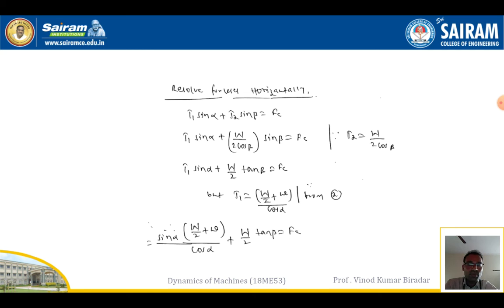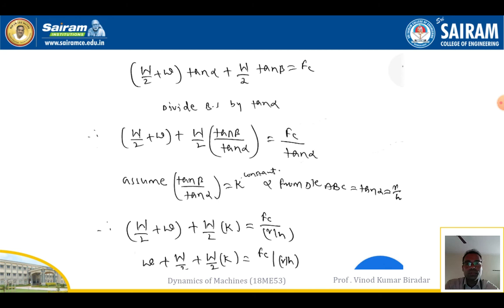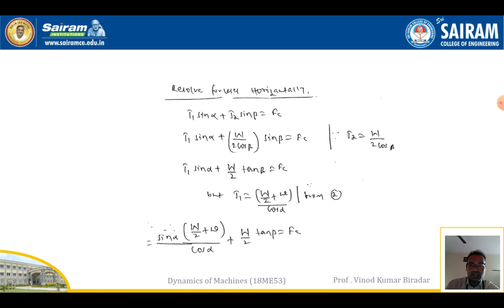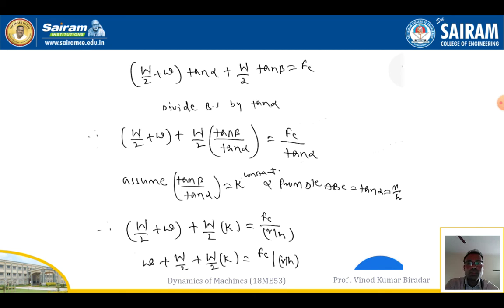After substitution and simplification: (w/2 + w)·tanα + (W/2)·tanβ = Fc. Dividing through by tanα: w/2 + w + (W/2)·(tanβ/tanα) = Fc/tanα. We define k = tanβ/tanα as a constant. From the triangle, tanα = r/h. Substituting these into the equation gives the next simplified form.